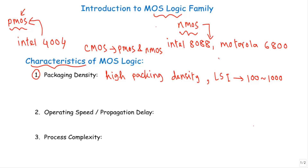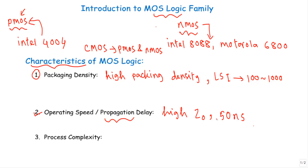The second characteristic is operating speed or propagation delay. MOS logic circuits usually have high output impedance, and because of that they have large propagation delay. The propagation delay of MOS logic circuits is around 50 nanoseconds.